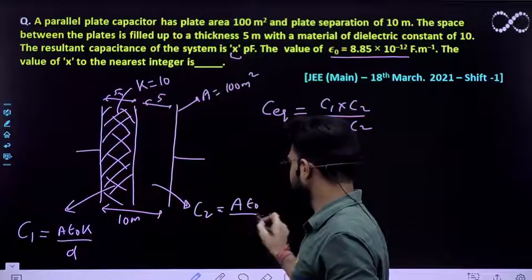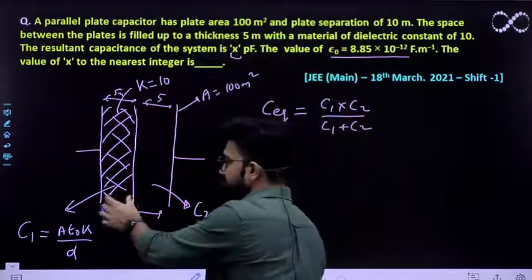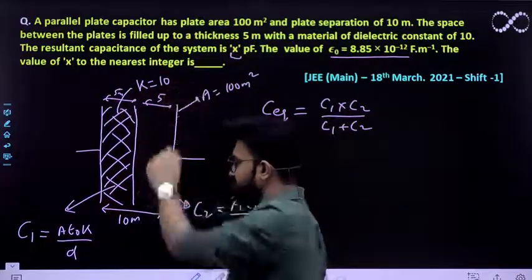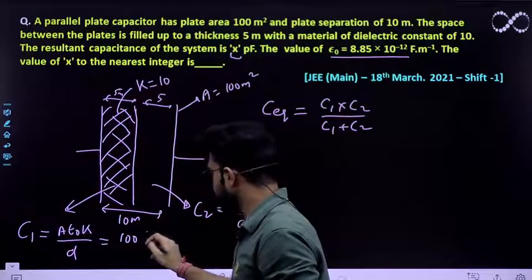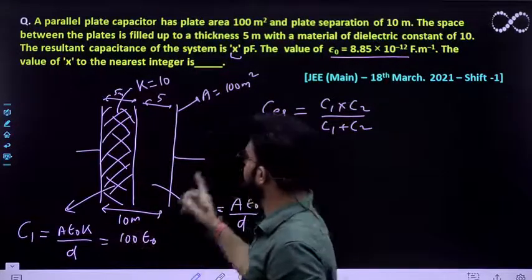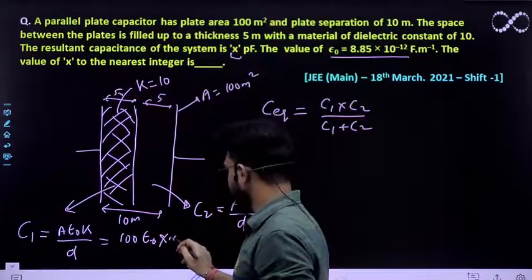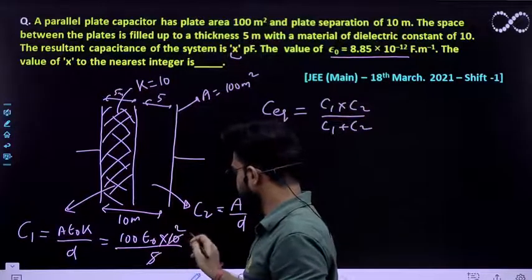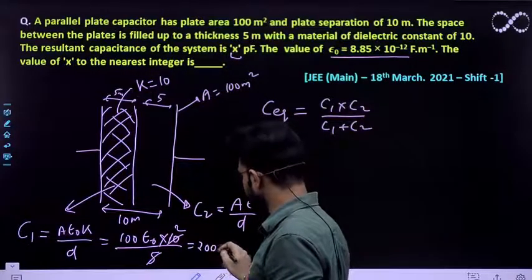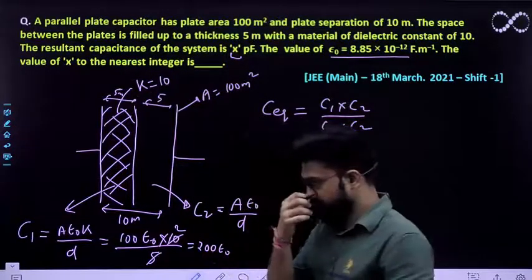Iska kitna hoga? A epsilon naught by d. Kyunki ye length d hai, toh ye bhi d hai, jo ki d already 5 meter given hai. Toh jaldi se value put karenge. Area is 100, epsilon naught ka aise hi rakhne dete hain, k ki value kitni hai? 10 divided by d, kitna hai? 5. Toh what you'll be getting? 5 to the 10, you'll be getting 200 epsilon naught. Ye hai c1.